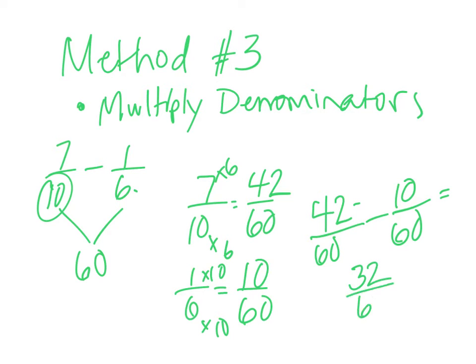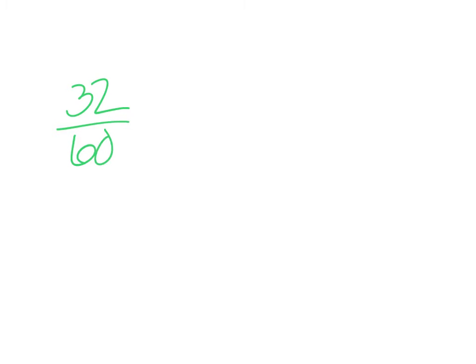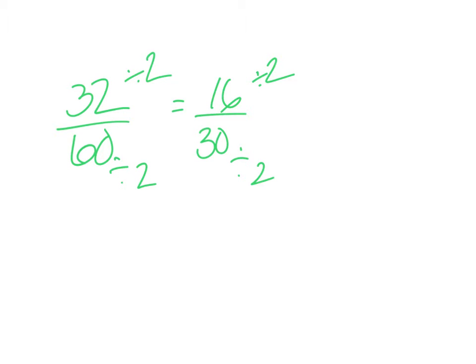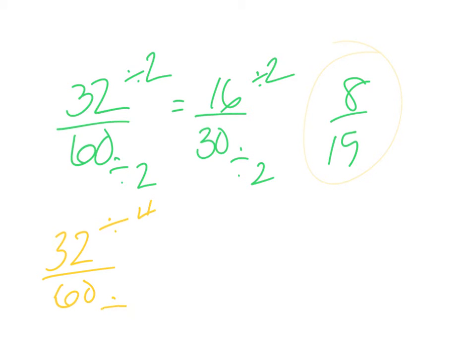Forty-two sixtieths minus ten sixtieths equals thirty-two sixtieths. Think of a number that goes into both evenly. You could divide by two, though you'll have to do it several times: sixteen thirtieths, divide by two again — eight fifteenths. We get the same answer. Notice if you had realized the largest common factor, you could have divided by four right away and gotten eight fifteenths.